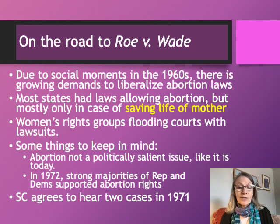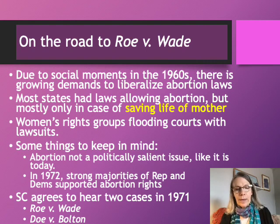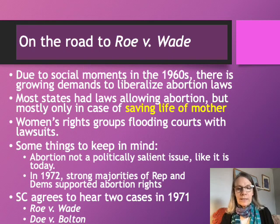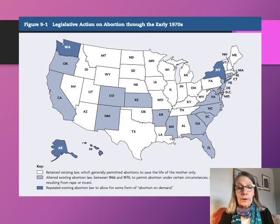The Supreme Court agreed to hear two abortion rights cases in 1971: Roe v. Wade and Doe v. Bolton. We're going to focus here on Roe v. Wade. Prior to the 1960s, most states had laws saying you could only get an abortion when the woman's life was in jeopardy. Starting in the 1960s moving into the 1970s, more states expanded their laws to allow abortion for other circumstances as well.